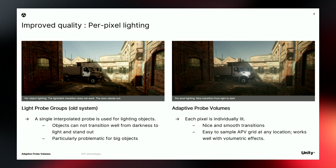One of the huge advantages of APV is that lighting is per pixel. It's a great improvement over the old system where lighting is per object. If we look at the left image, the truck is not transitioning well from darkness to light, and the door is clearly standing out — because each mesh is lit with a single interpolated probe. But on the right, with APV, everything is correctly lit, and each pixel can sample APV at any location, giving nice and smooth transitions.